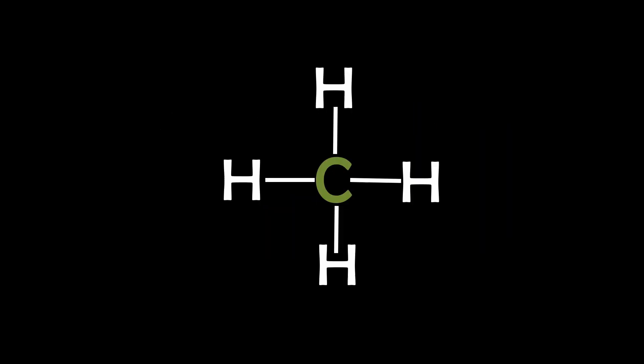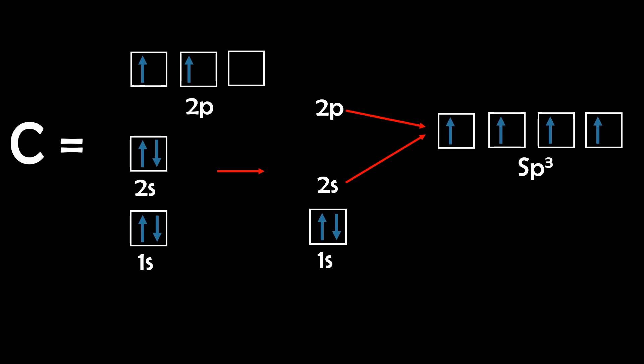Now let's look at one last example, methane. Here, all four bonds are direct sigma bonds. So we need four equivalent bonds for this molecule to be stable. And you might have guessed it, but to achieve this, that means we need to hybridize all the valence orbitals of carbon, resulting in SP3 hybridization.